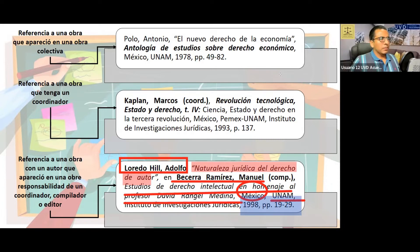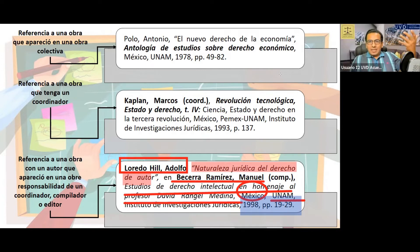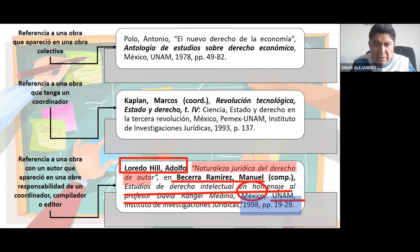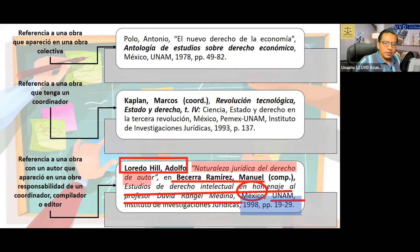En esta obra se cita a Loredo Gil Adolfo, cuyo ensayo es 'Naturaleza Jurídica del Derecho de Autor'. ¿Usted de dónde obtuvo esta información? Lo obtuvo de la obra compilada 'Estudios de Derecho Intelectual en homenaje al profesor David Rangel Medina', cuyo compilador es Manuel Becerra Ramírez. Es decir, Loredo Gil es el autor que usted está consultando, y se agrega de dónde tomamos este ensayo.